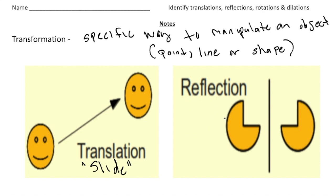The second type of transformation is called a reflection. For this one, write the keyword: mirror. Here it looks like we have a little pac-man, and this pac-man is being reflected across the y-axis. We'll get into more depth about that later on.